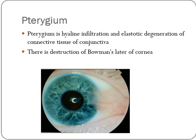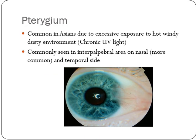Pterygium causes damage to Bowman's layer, which is the second layer of the cornea, leading to corneal opacity. This is very common in Asian countries, obviously because of the excess exposure to the hot, windy, dusty environment. Chronic ultraviolet light exposure has been considered to be one of the major risk factors.